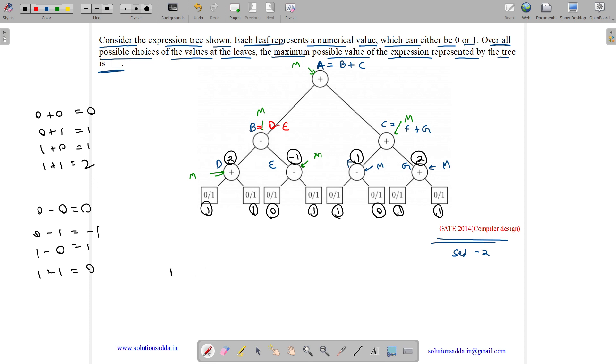What is our B value? B is D minus E. D is 2 minus E is minus 1, so it comes out to be 3. B value is 3. What is C? C is F plus G. F is 1 and G is 2, so it comes out to be 3.